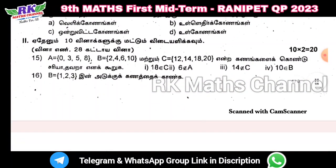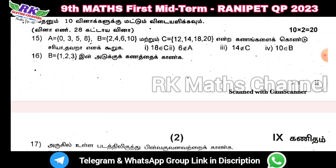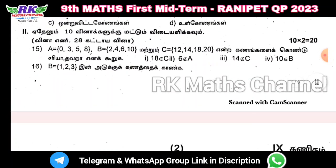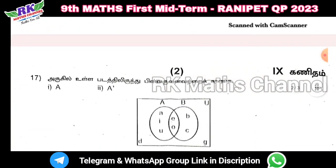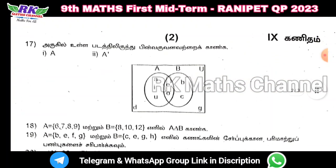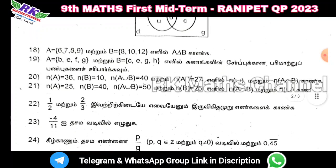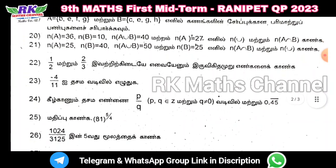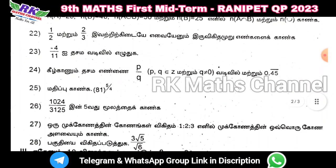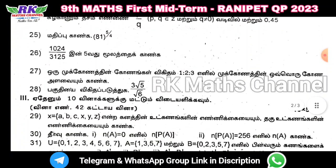Two marks: 14 questions. Question number 28 is a compulsory question. So limit two-mark question number 28 is compulsory.